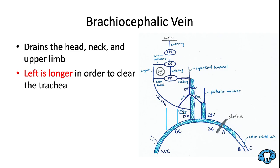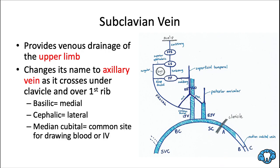One of the veins that drains into the brachiocephalic vein is the subclavian, which provides venous drainage of the upper limb. It changes its name to the axillary vein as it crosses under the clavicle and over the first rib — the same as was true for the subclavian and axillary arteries. For arm veins, we have the basilic on the medial side and the cephalic vein on the lateral side, with the median cubital vein connecting the two — a common site for drawing blood or placing an IV. I remember ABC for the arm veins.